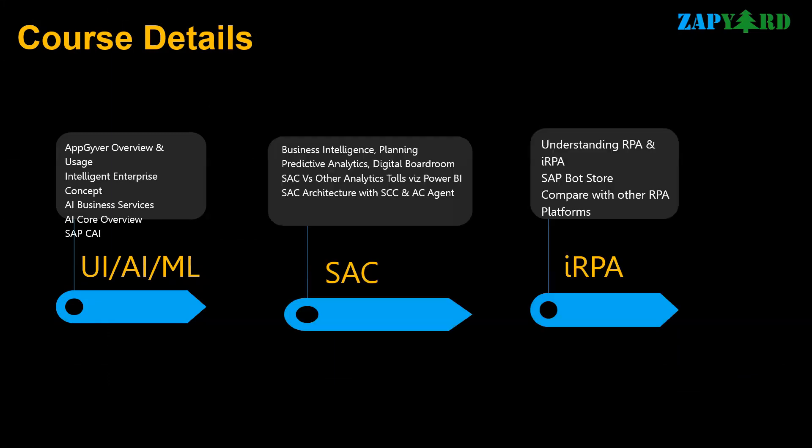AppGyver is the boon for no-code, low-code app development. Even if you are not a developer, you may want to give it a try — we will go through AppGyver and implement some use cases. We will also learn how BTP supports Artificial Intelligence and Machine Learning. Analytics being bread and butter for many consultants, we will do predictive analytics and walk through the digital boardroom. We will compare SAP Analytics Cloud with other analytics tools like Power BI. Finally, we will understand RPA and IRPA and explore the SAP bot store while comparing other RPA platforms.